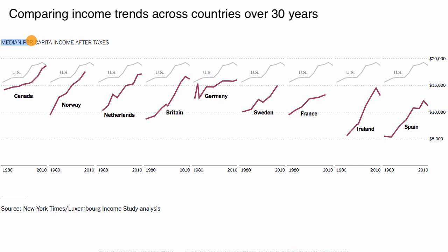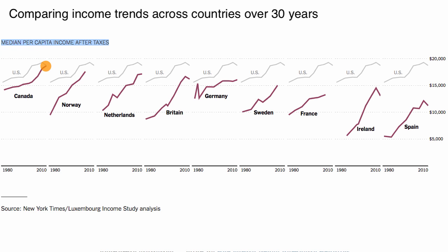The goal of this video is to understand how median per capita income after taxes has trended in the United States in comparison to some other countries over a 30-year period, from 1980 to 2010. In the first comparison, the United States is compared against Canada. At the beginning of this time period, the median per capita income after taxes in the United States was higher than that of Canada, but over the course of this 30-year period, they've gotten pretty close to each other. The rate of increase in Canada over that period has been higher, and that's what got them to parity.